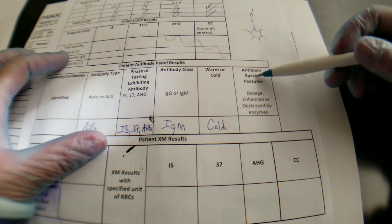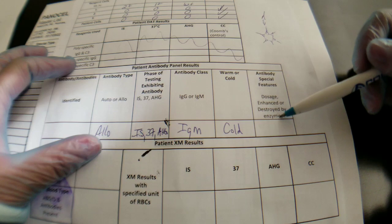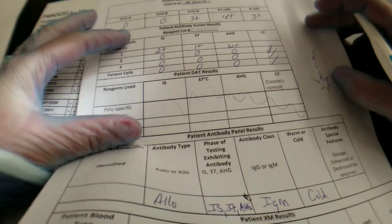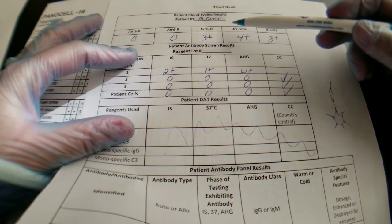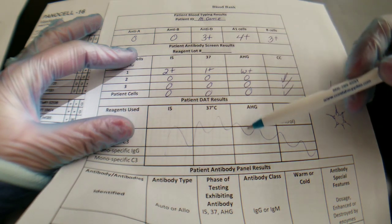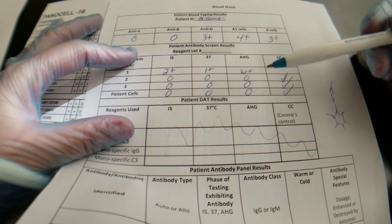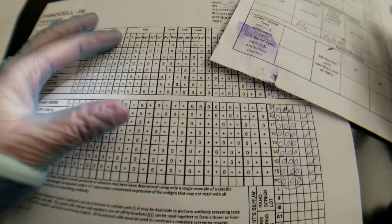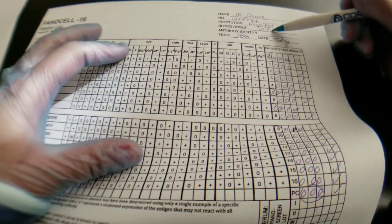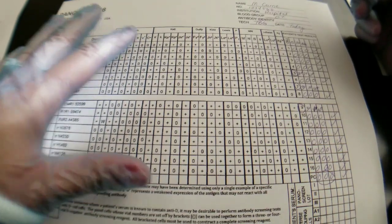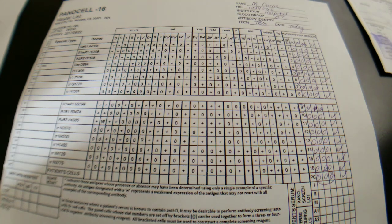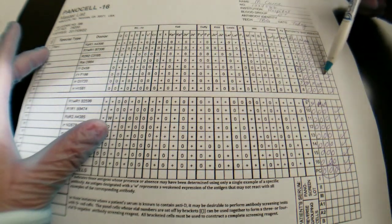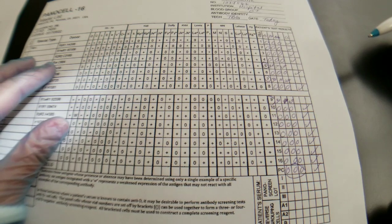So when we identify the antibody, we're going to be able to answer this block here. For those of you that don't know, this is a printout of our LIS that I made for our program and it is showing you all the results that we have done so far of this patient, which you have seen in other videos as well. This patient is an O positive patient, and that's already recorded on the identification panel. So what I'm going to do to start out is I'm going to highlight the lines of the donor cells that the patient was positive in.